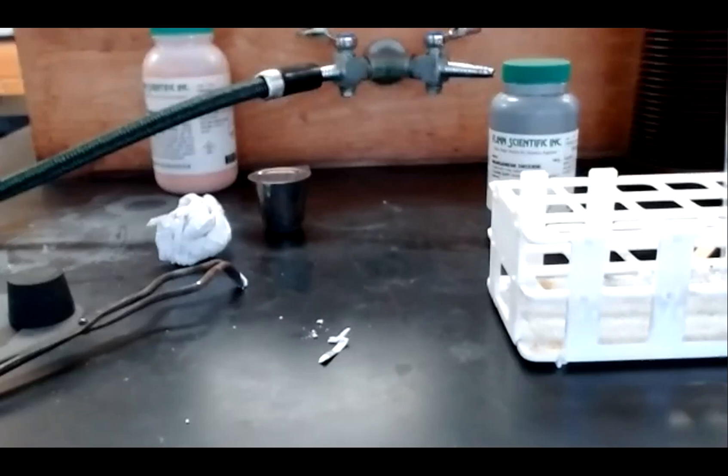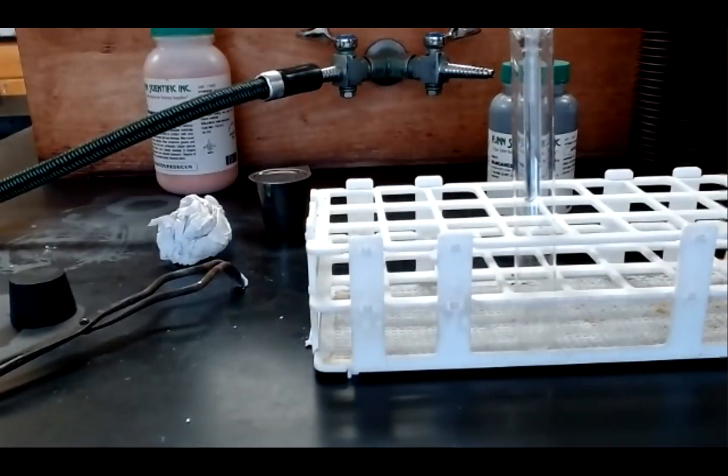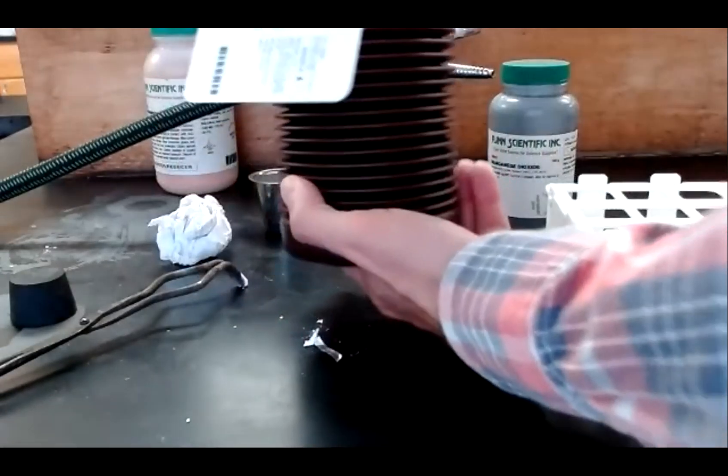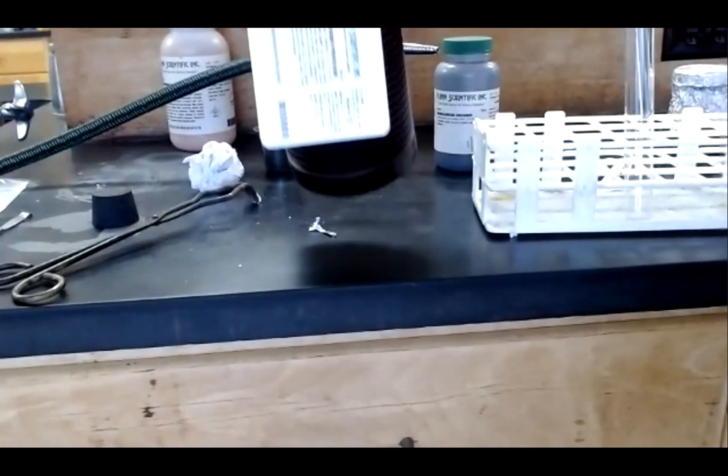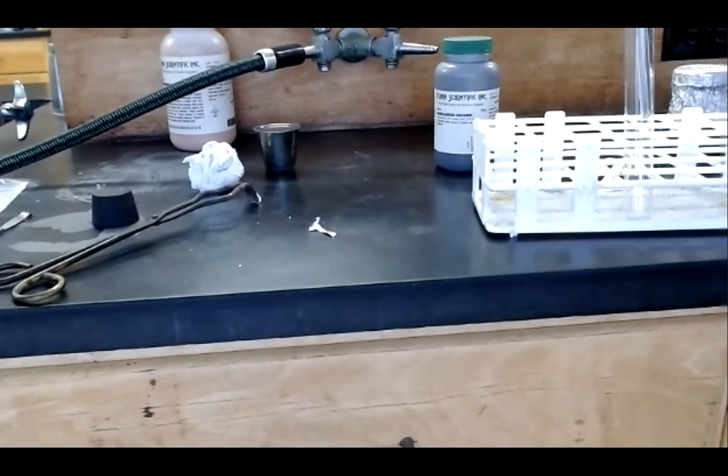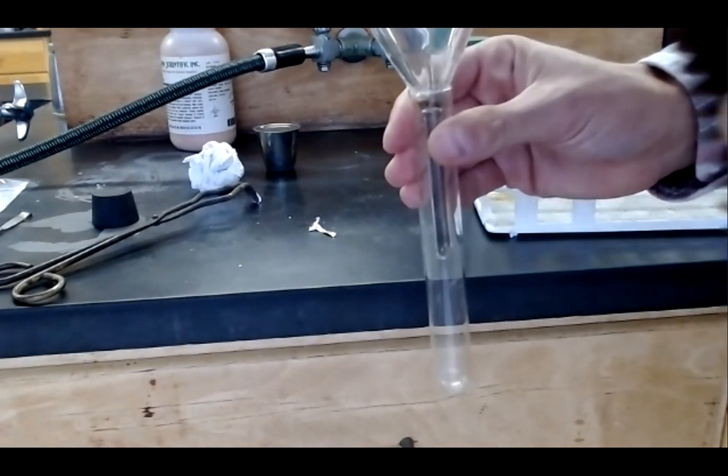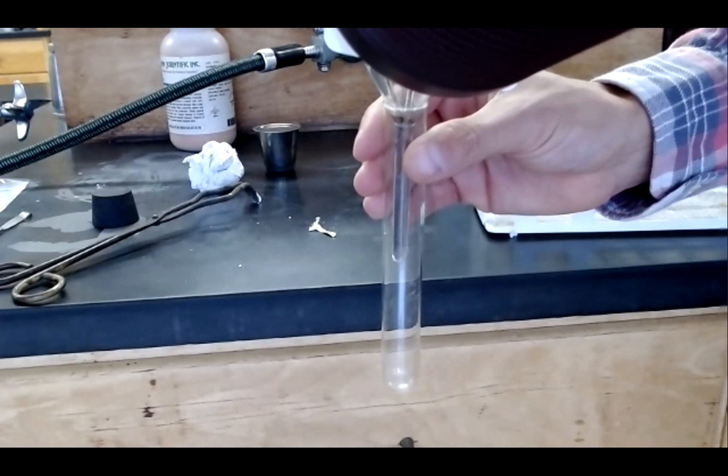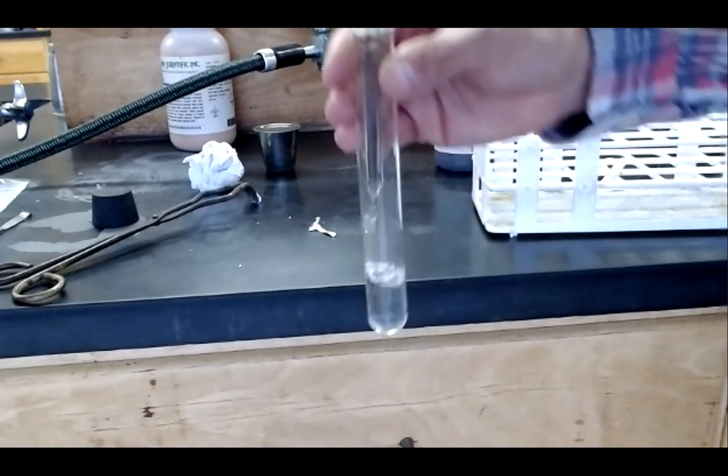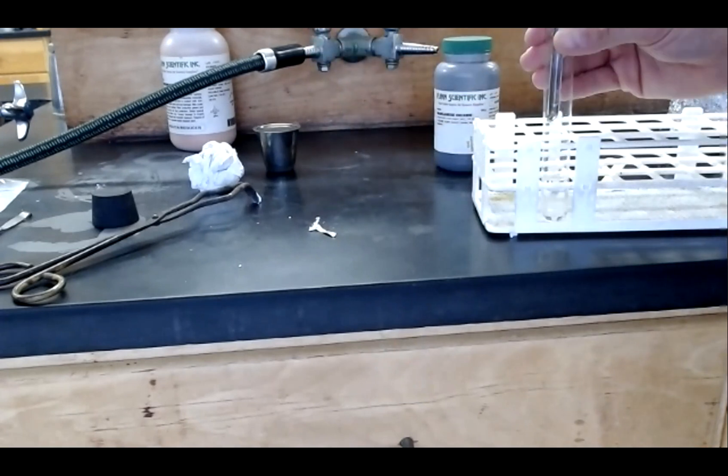The next reaction I'll show you is the decomposition of hydrogen peroxide. Hydrogen peroxide will break down into water and into oxygen gas. To carry out this reaction, I'm going to mix a small amount of concentrated hydrogen peroxide. This is about 30% hydrogen peroxide, which is somewhere around 10 times stronger than what you would typically buy. I'm going to mix that into a test tube.